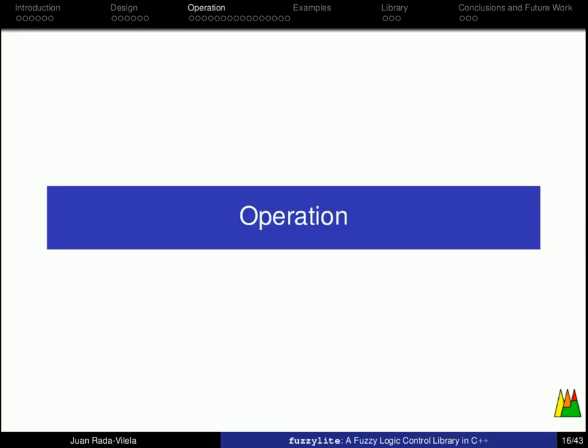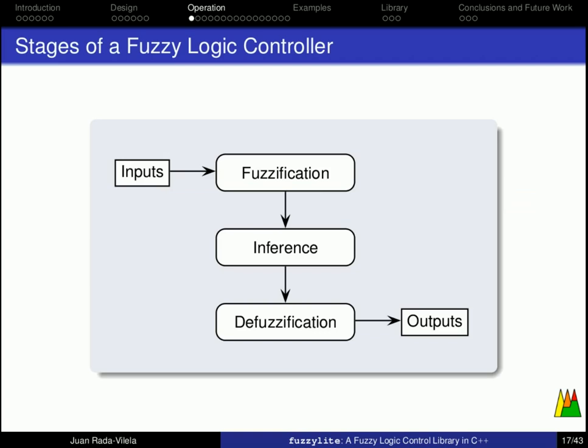It is important to understand the underlying operation of fuzzy logic controllers, because it is at the very core of FuzzyLite. So, the moment that you rank the quality of the service, the fuzzy logic controller will undergo three stages, named fuzzification, inference, defuzzification, and finally, we will obtain the output, which would be the tip.